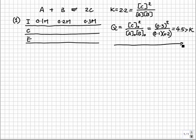A simple way to remember this is to draw a number line to represent the position of Q relative to K. K is 2.2, Q is 4.5. So the reaction will have to move backward to reach equilibrium.